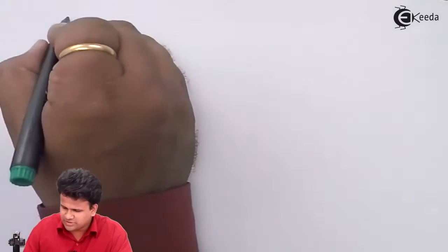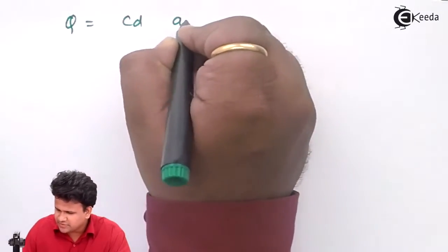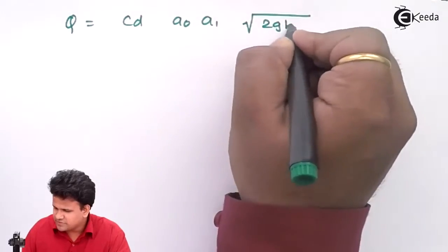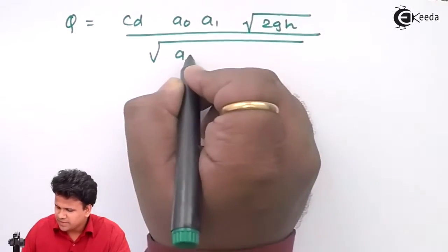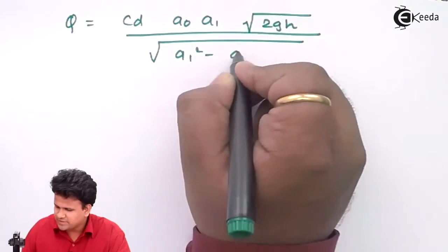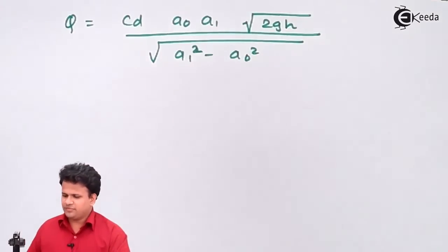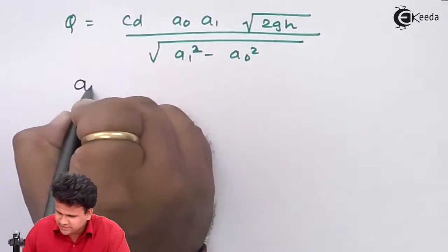Now let us calculate the discharge. We know discharge Q equals Cd × a0 × a1 × √(2gh) divided by √(a1² − a0²). This is what we have to calculate.